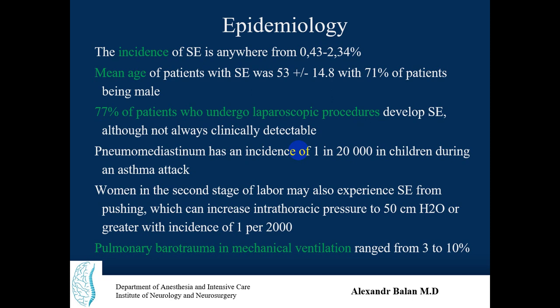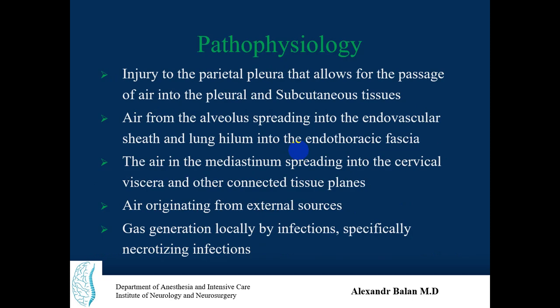Key aspects of pathophysiology include: injury of the parietal pleura allowing air passage into pleural and subcutaneous tissues; air from the alveolus spreading into the endovascular sheath and lung hilum into the endothoracic fascia; air in the mediastinum spreading into the cervical viscera and connected tissue planes; and air originating from external sources or generated locally — mostly by infection in necrotizing infections.